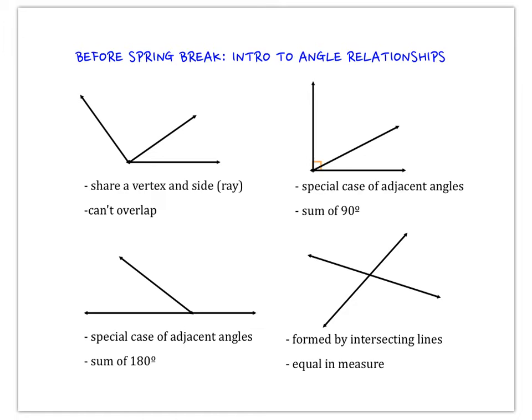If we look at the top left, one of the first ones that we studied were two angles that had to share a vertex and a side and couldn't overlap. If you look at those two, they appear right next to each other, and we called those adjacent angles.